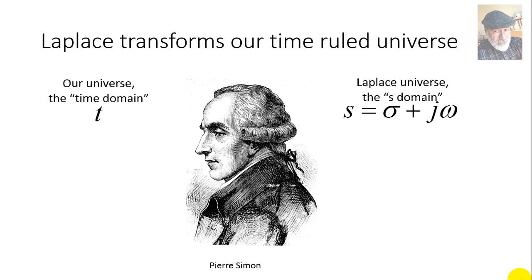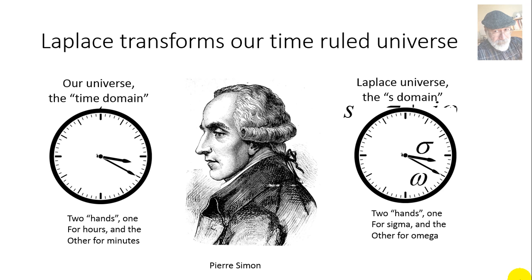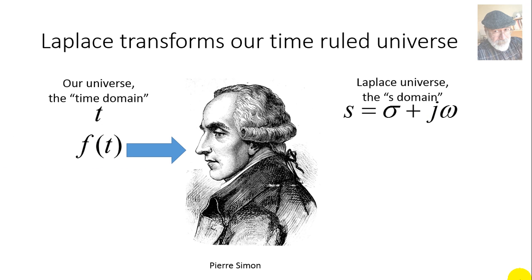The first time I read about Laplace transforms, I thought that while in our universe we had watches and clocks with two hands — one for hours and one for minutes — perhaps in the Laplace domain, the s-domain universe, clocks also had two hands: one for sigma and one for omega. Of course that is absurd, but it's a very appealing, intuitive concept — that's why I mention it as an anecdote. We present our universe to Laplace, represented by functions of time like f(t), and Laplace transforms that into uppercase F, a function of the complex frequency s.